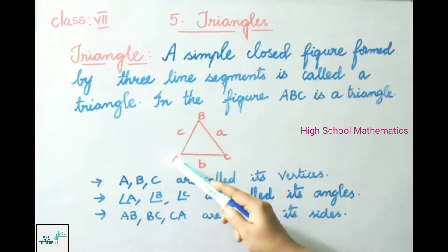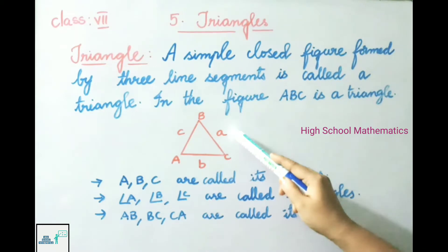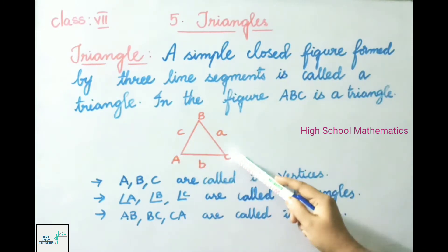Side opposite to angle A is BC and it is denoted by a. Side opposite to angle B is AC and it is denoted by b. And the side opposite to angle C is AB and it is denoted by c.